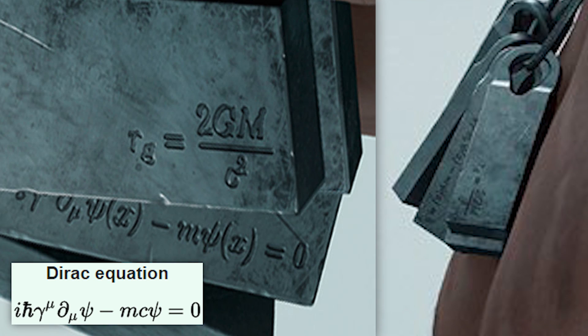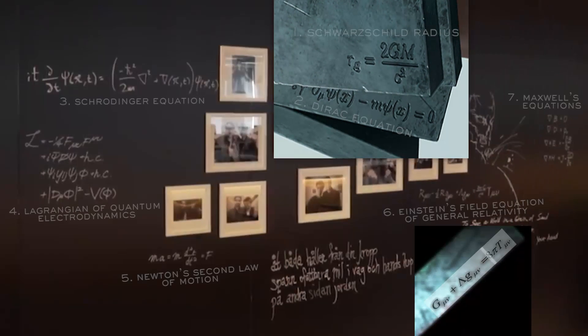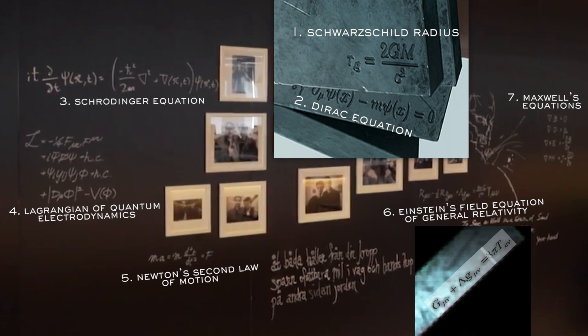A fun fact about the Dirac equation is that, when it was first established, it predicted the existence of positrons, the antimatter of electrons. And this eventually culminated in the discovery of antimatter in general. So yeah, all of these equations are a big deal in the world of physics.